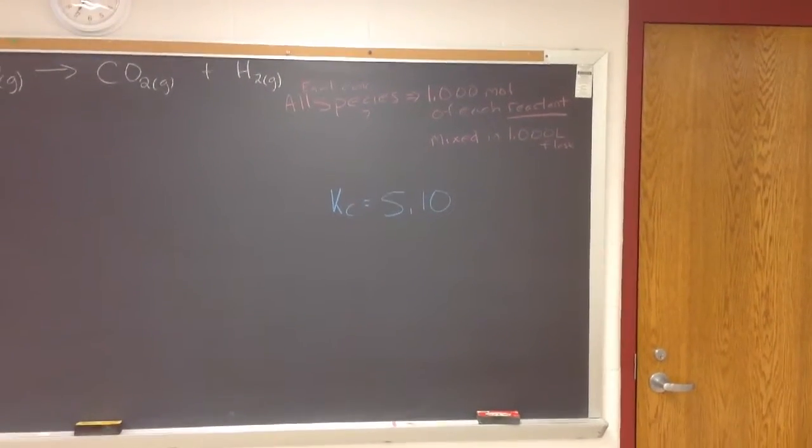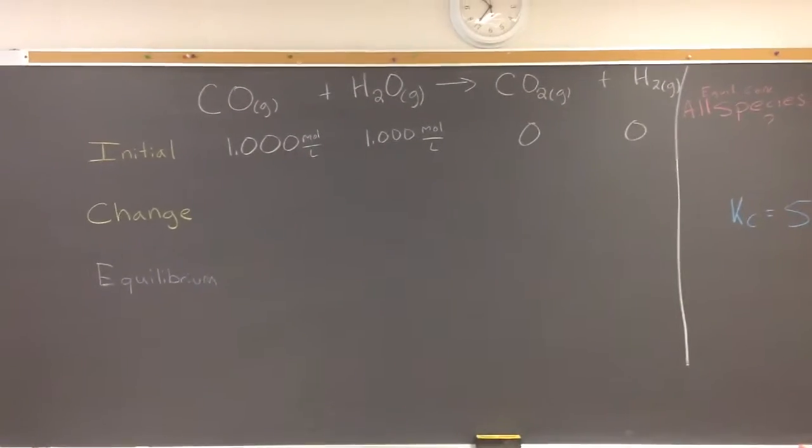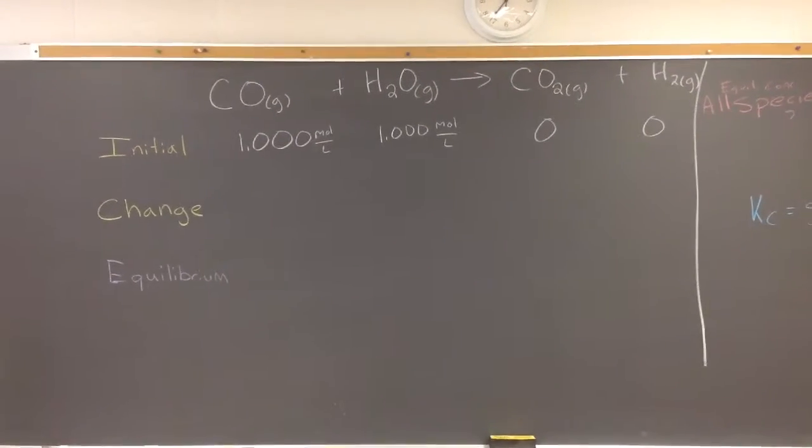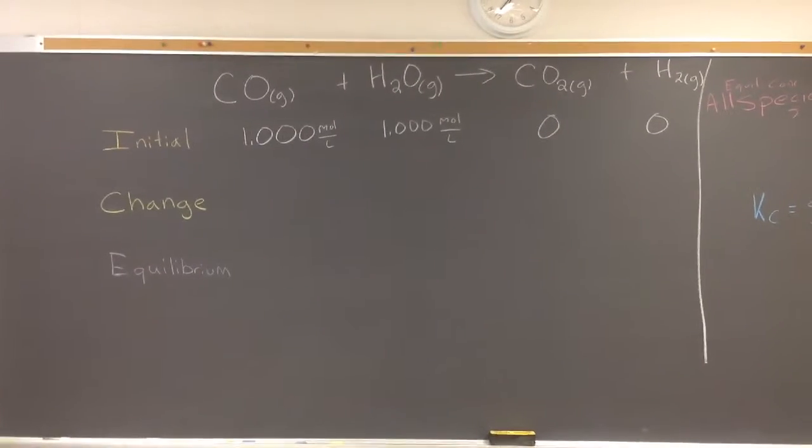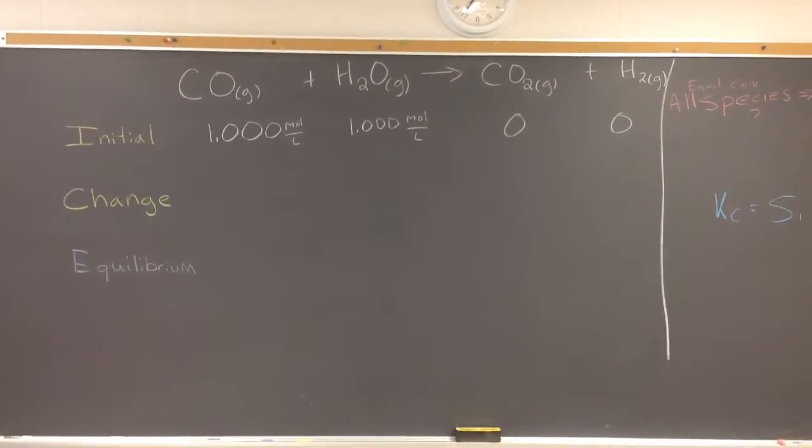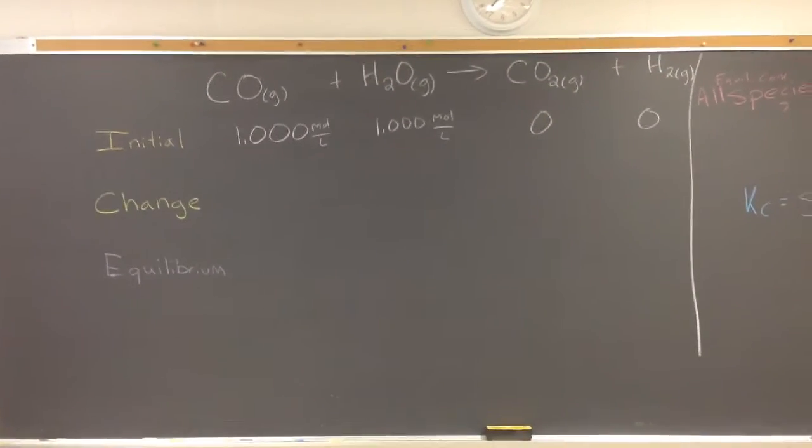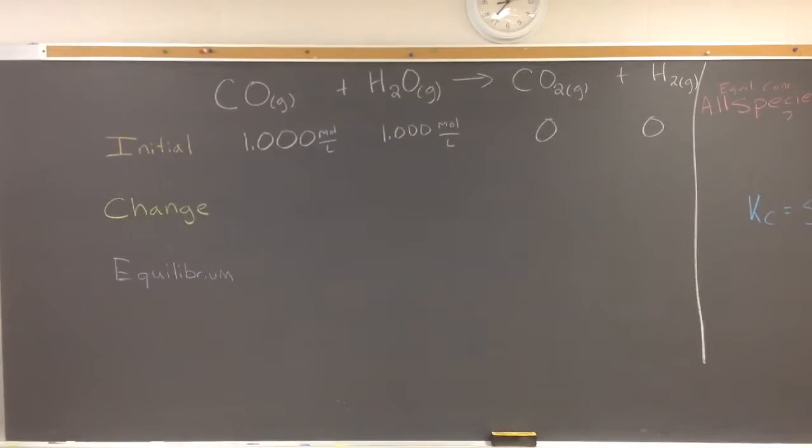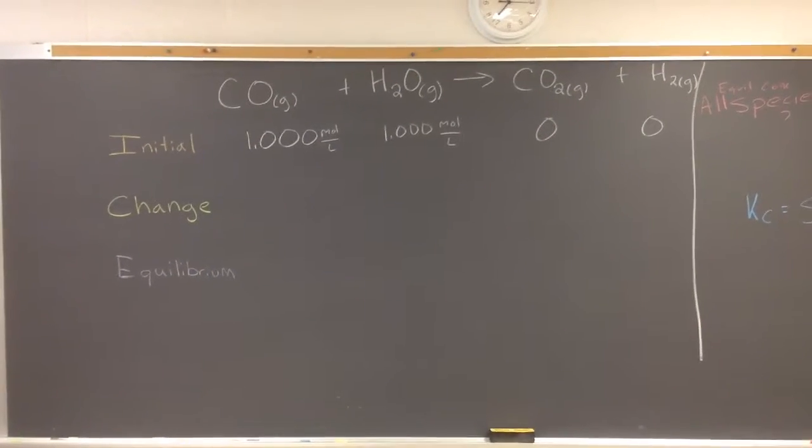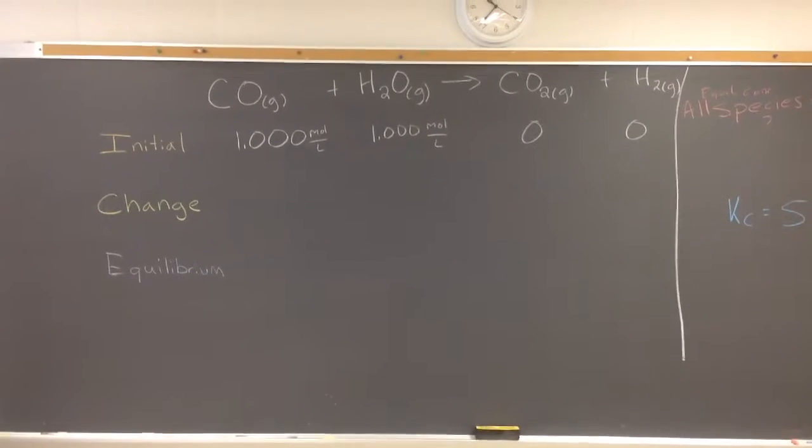So let's pause. So now what we've done is we've put in our initial concentrations. If we have one liter container and we have one mole of each of the CO in the water, we know we have one mole per liter. And we have zero moles per liter of the products as indicated. So it might be helpful now to do the next thing is to look at the reaction stoichiometry. And we know that there's a one-to-one-to-one-to-one relationship.